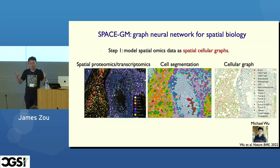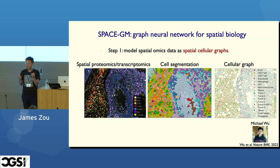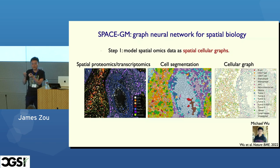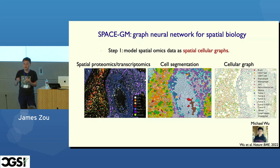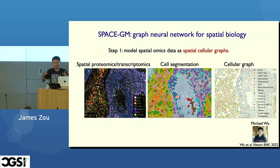The first thing we do is segment out the individual cells. Once we have the individual cells, we create a cellular graph where the nodes correspond to individual cells and the edges indicate whether two cells are in some sort of physical relationship — for example, if they're physically touching, or if they're more distant. If my image has 10,000 cells, this graph has 10,000 nodes.